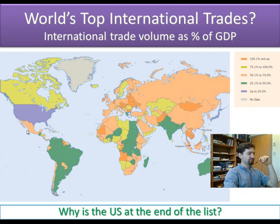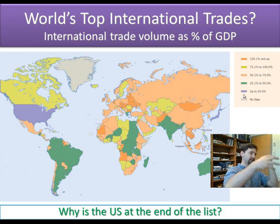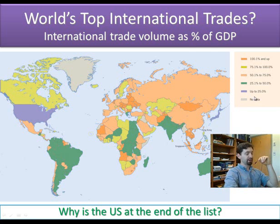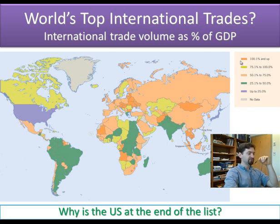This map shows who trades more or less, adjusted for country size. The United States is at the very bottom of the list — compared to other countries, the US trades much less as measured by the percent of trade volume compared to the volume of the economy as a whole. Only about 25% or less of the goods and services that enter and leave the United States comprise less than 25% of the national product. In comparison, Hong Kong or Singapore are selling and buying more than the GDP of the entire country.